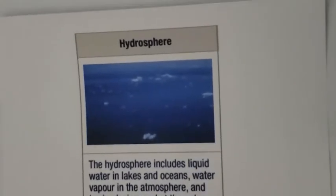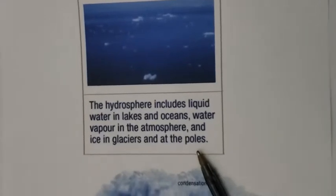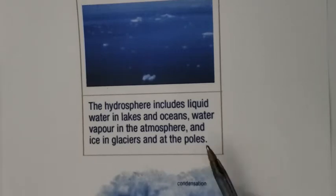The next component is the hydrosphere. The hydrosphere includes all the water on Earth: liquid water in lakes and oceans, water vapor in the atmosphere, and ice in glaciers and at the poles. It doesn't matter what form the water is in — whether it's vapor, liquid, or solid — that's the hydrosphere.